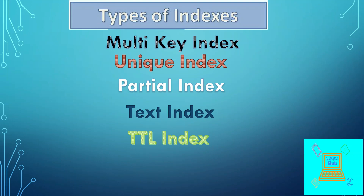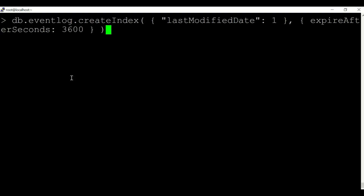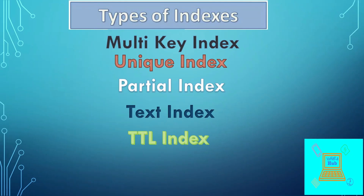TTL indexes can be used in cases where a collection contains data such as event logs that need to be cleared in a timely fashion. A TTL index can be created in this manner — for the field 'lastModifiedDate', the documents will be deleted after one hour.